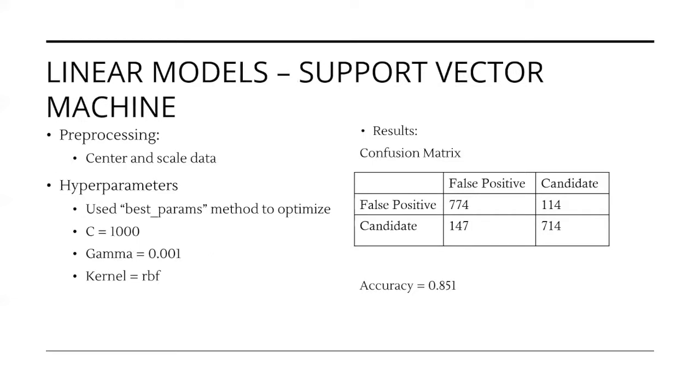Next, we fit a support vector machine model. First, we centered and scaled the data. Then, we optimized the hyperparameters and got c equal to 1000, gamma equal to 0.001, and then the best kernel to be the RBF. After fitting the optimal model, we had an accuracy of 0.851 along with the associated confusion matrix.